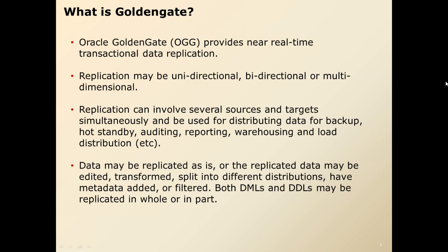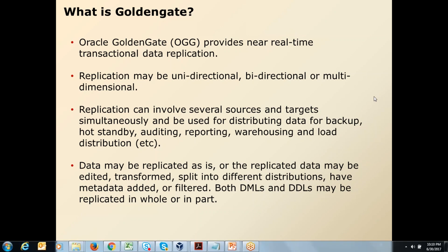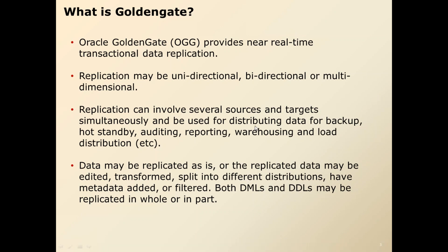We proposed a solution where reporting jobs would run on the secondary server instead of the primary server. So OLTP transactions ran on the primary server and reporting jobs on the secondary server. Reporting jobs could run on data with only a 5 to 7 second lag. As a result, reporting jobs were no longer interfering with OLTP transactions, customer experience improved dramatically, and the CPU load on the primary database came down significantly.